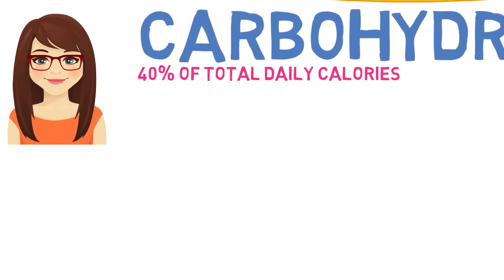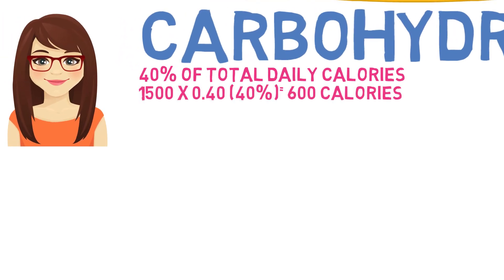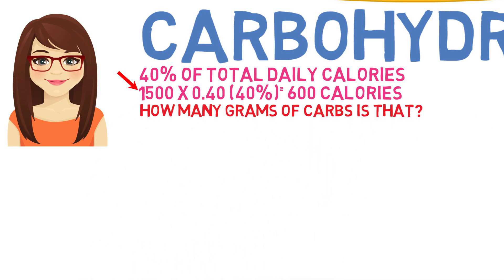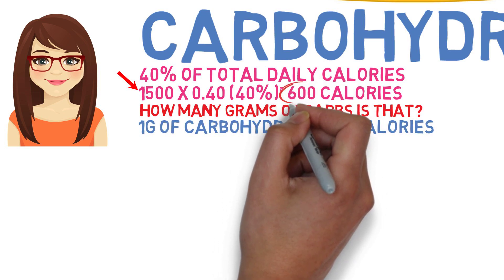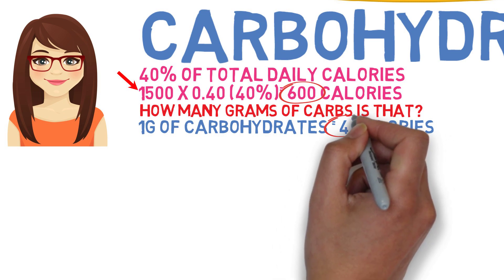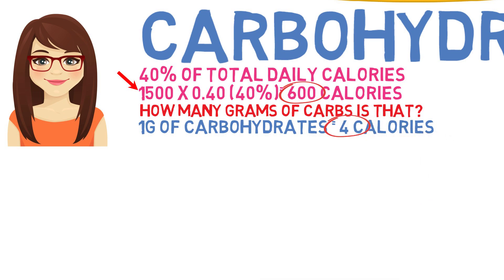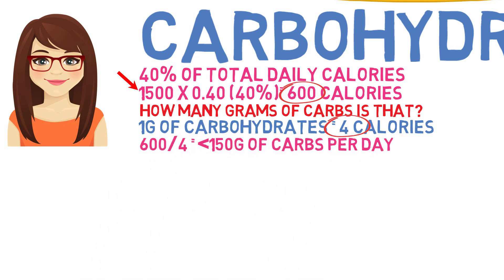For Sarah that would be 1500 multiplied by 0.40, which is 600 calories. Your equation would be different — simply input your own calculated weight loss calories instead of Sarah's 1500. Since 1 gram of carbohydrates is 4 calories, we take 600 divided by 4, and the most amount of carbohydrates Sarah should consume each day is 150 grams.